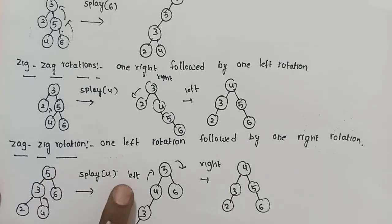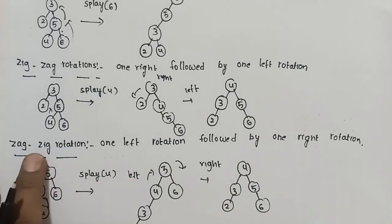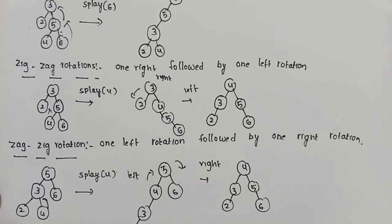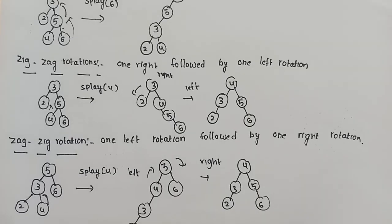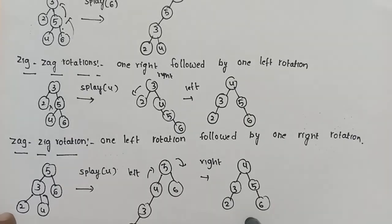After the splaying operation, 4 is the root node. There are 6 rotations in the Splay Tree: Zig, Zag, Zig-Zig, Zag-Zag, Zig-Zag, and Zag-Zig. Using these rotations, you can place the recently accessed element at the root. The balance condition is also maintained in each case.